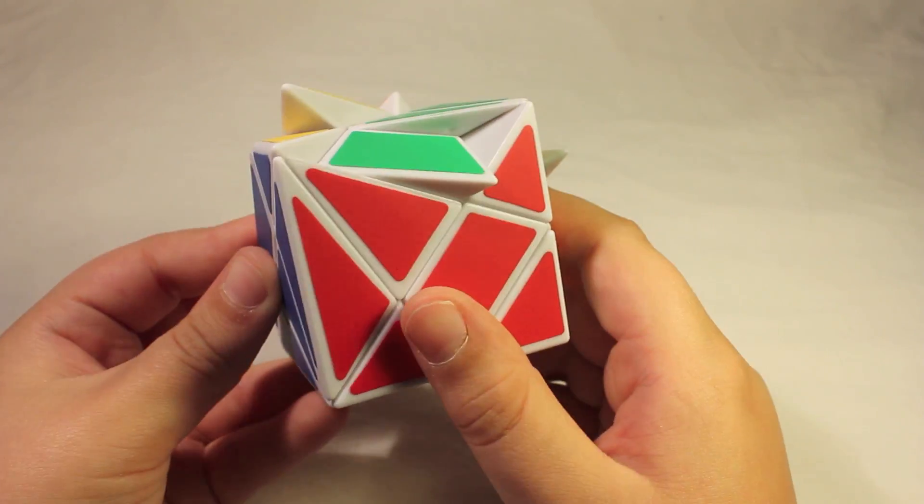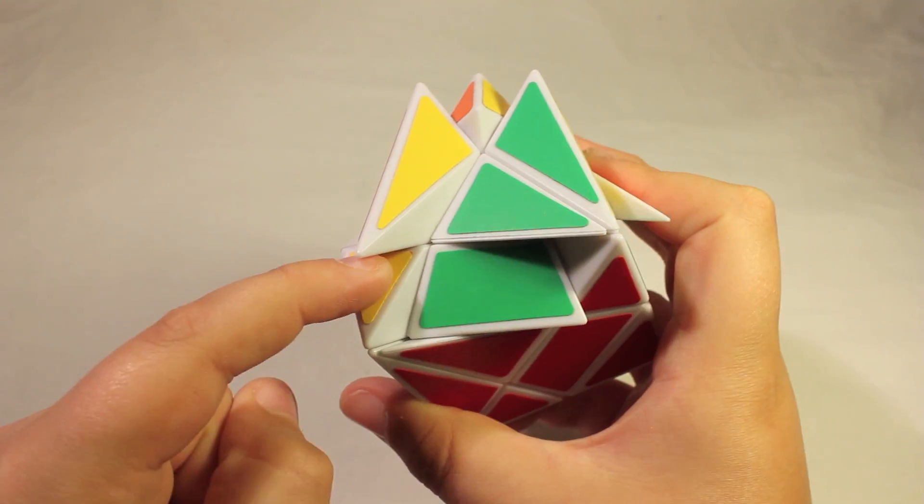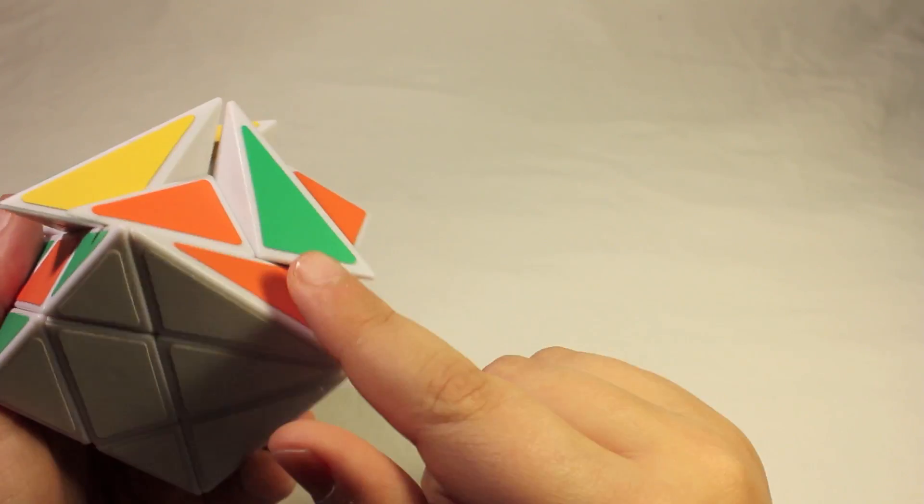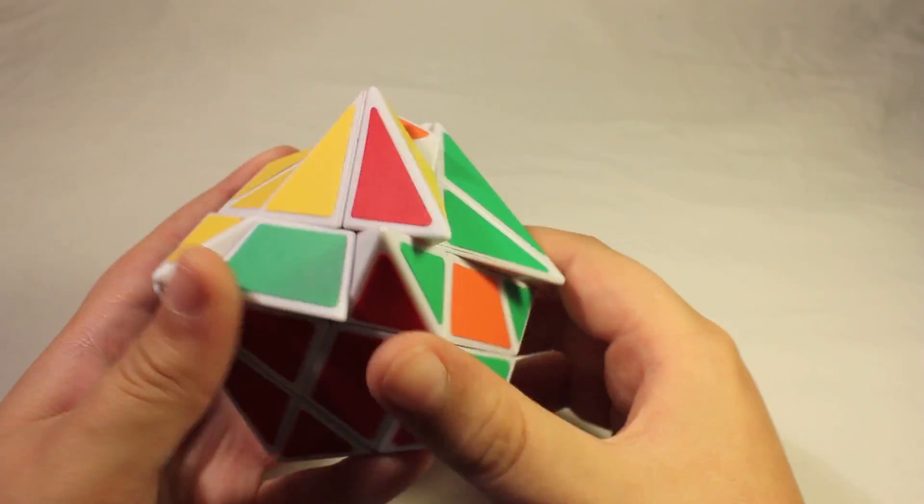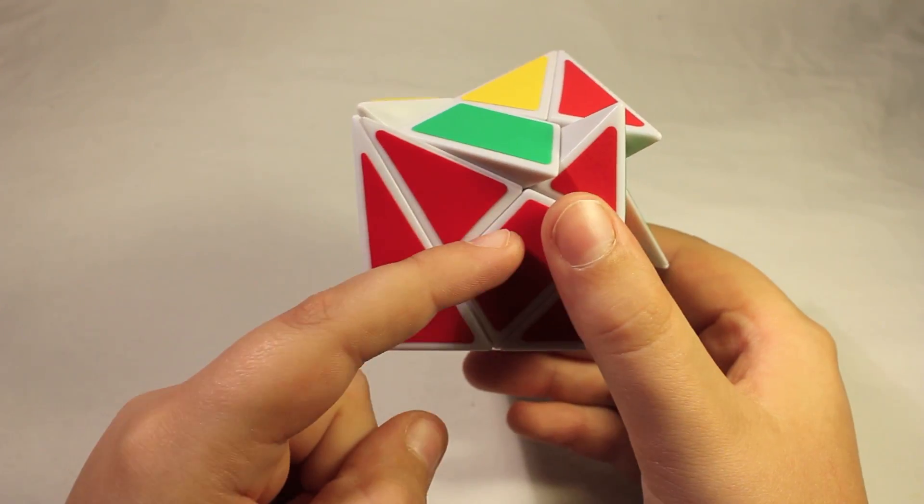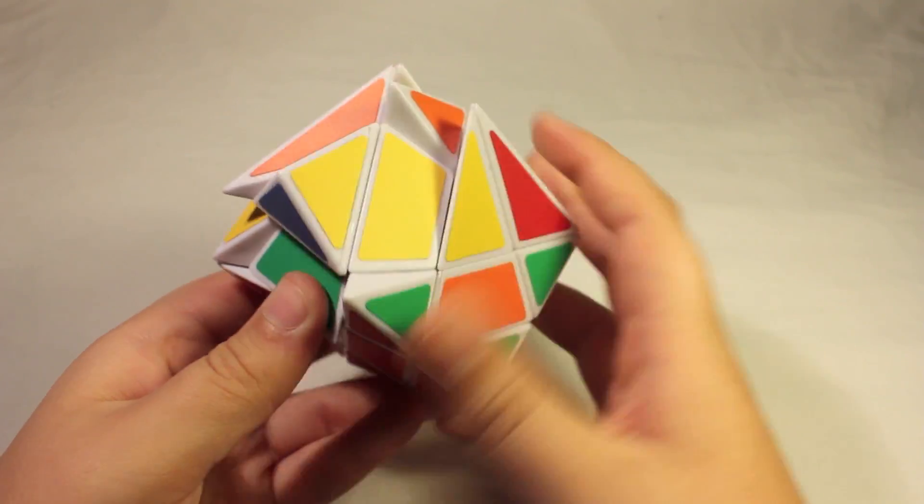Now let's go to this one. We see that we need a yellow and red. So it's right here. This was actually the piece we pulled out when putting in this one. So we can see that red is the bottom color. And so we need to put red closest to red. And then we can do the standard algorithm.